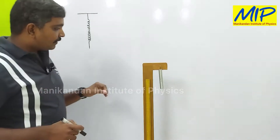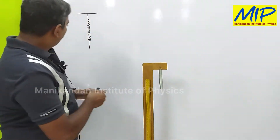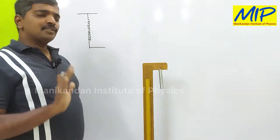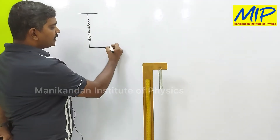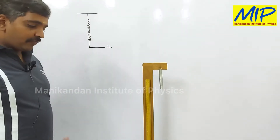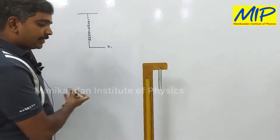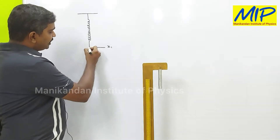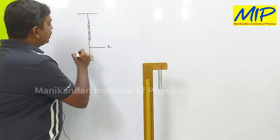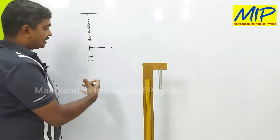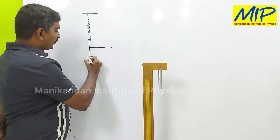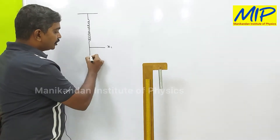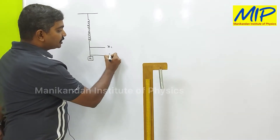We have a spring with a needle. When there is no mass connected to the spring, this is the initial position of the spring, said to be x1. If I connect the hanger with mass m and apply this mass, we get an extension. The spring is now pulled by the mass m, and the position of the needle moves from x1 to x2.